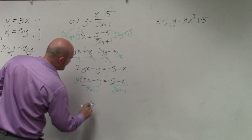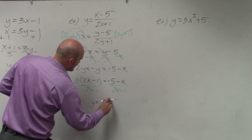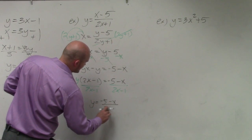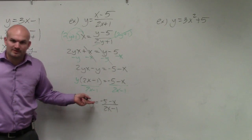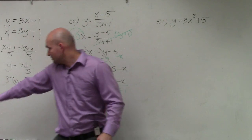Therefore, y equals negative 5 minus x divided by 2x minus 1. And then to write the inverse, you would just swap the y with f inverse like I did over there.